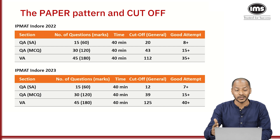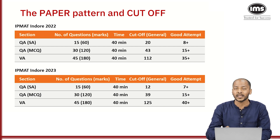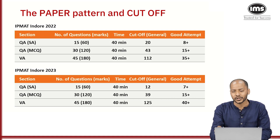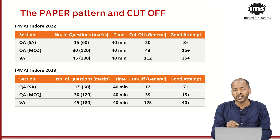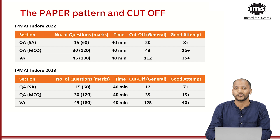The paper pattern and cutoff for IPMAT Indore has remained the same over the last two years. In IPMAT Indore 2022 and 2023, there were 15 questions of QA short answer, 30 questions of QA MCQ, and 45 questions for verbal ability. Each question carries 4 marks. The short answer section does not have negative marking. The cutoffs for the short answer section were 20 marks out of 60 in 2022 and 12 marks out of 60 in 2023.